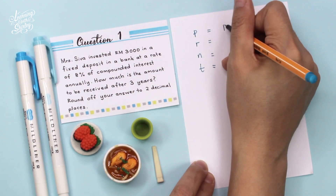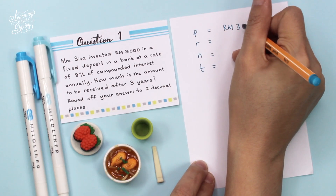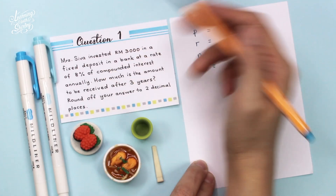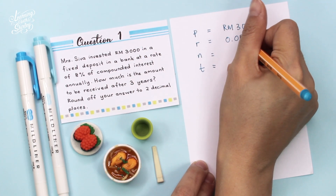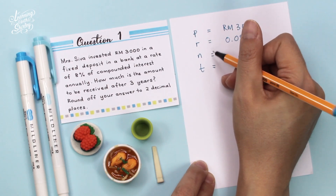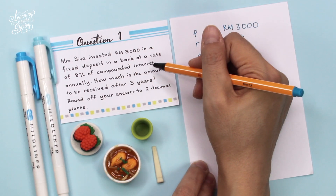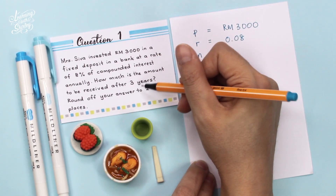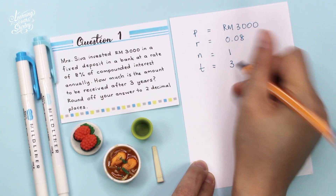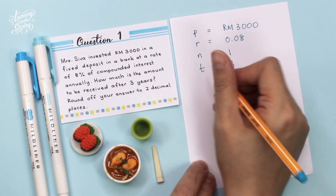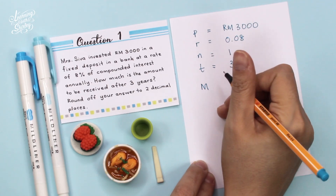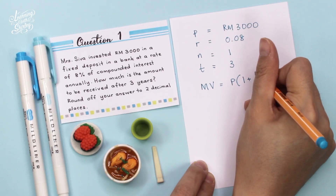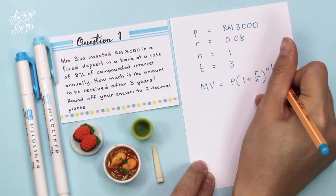P is RM3,000. R is the rate which is 8%, so R is 0.08. N is annually — compounded interest annually means N is 1. T is after 3 years, so T is 3. We're going to substitute into the formula of compound interest which is MV equals to P bracket 1 plus R over N, to the power NT.